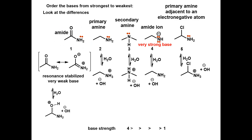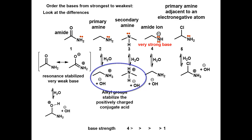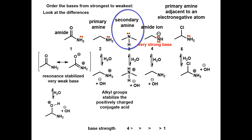Now let's compare compounds 2, 3, and 5. For compounds 2 and 3, alkyl groups will stabilize a positive charge, and will shift the equilibrium towards the conjugate acid. The more alkyl groups, the greater the effect. This makes the secondary amine a stronger base than the primary amine. Note that solvent effects occur only with tertiary amines, so you do not have to worry about this factor when comparing these compounds.